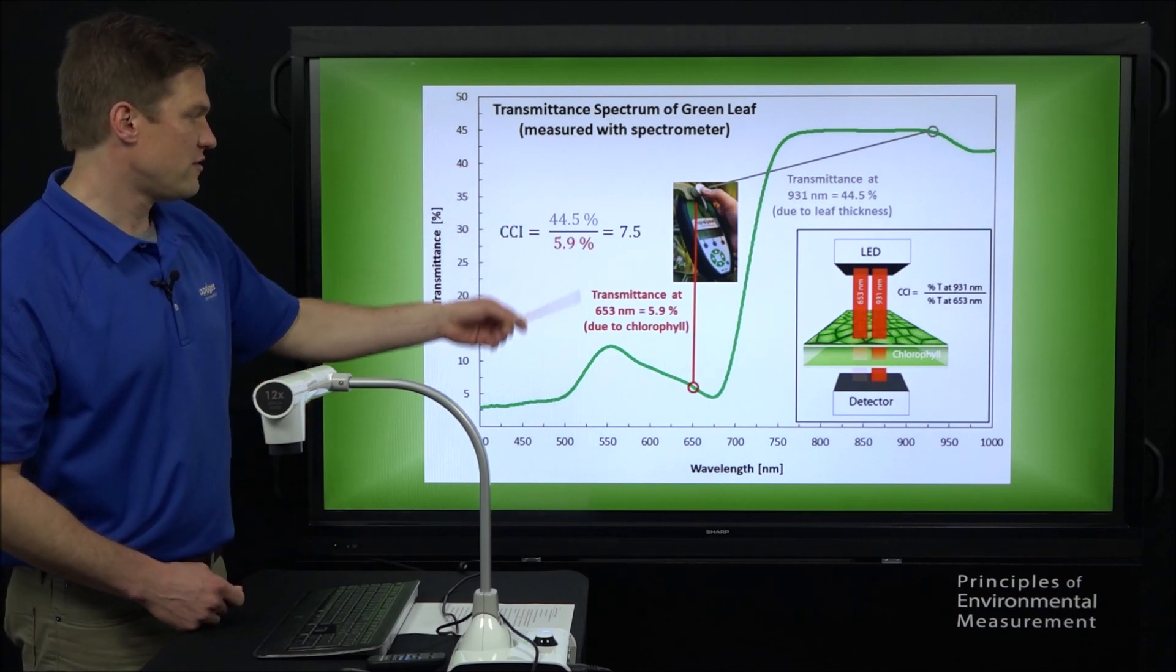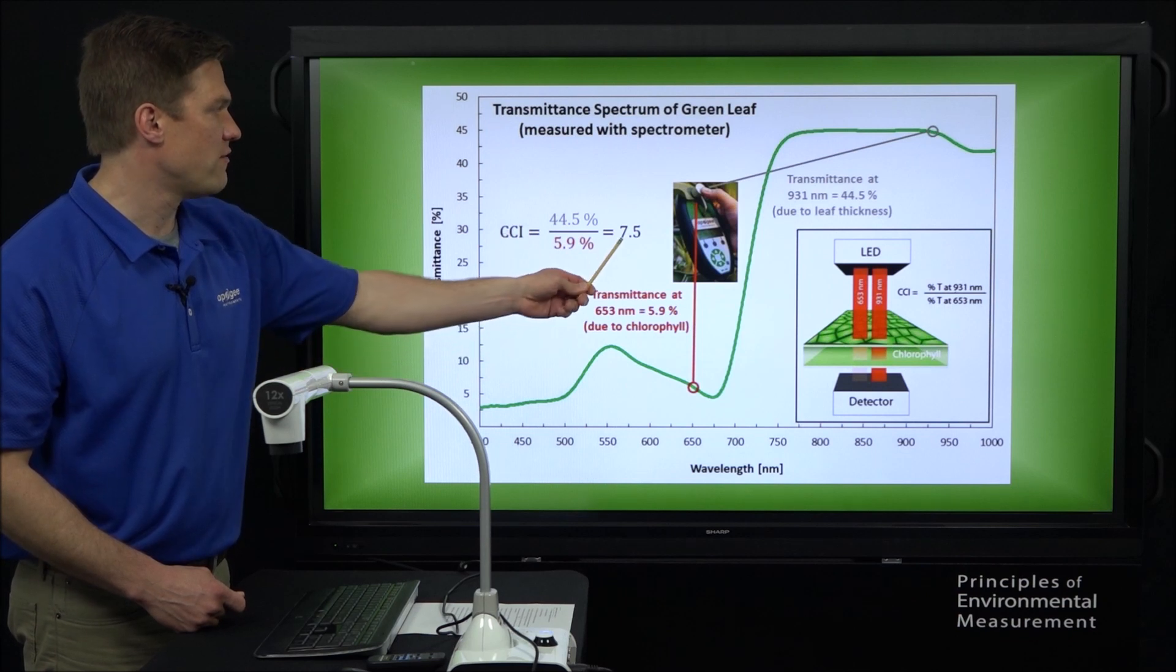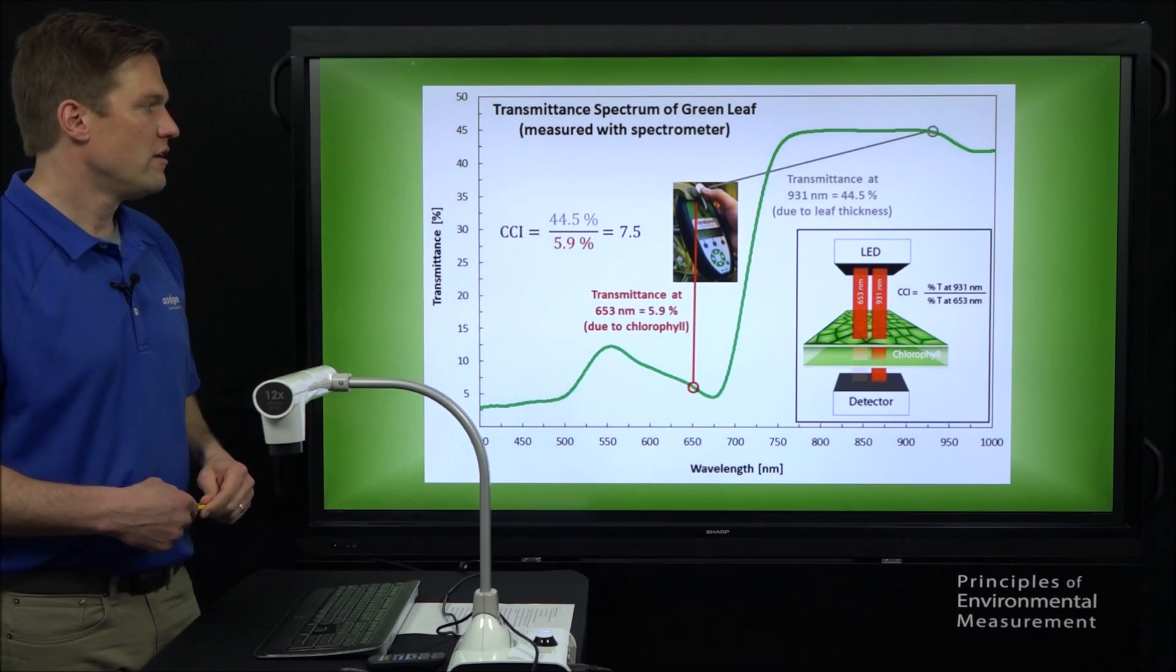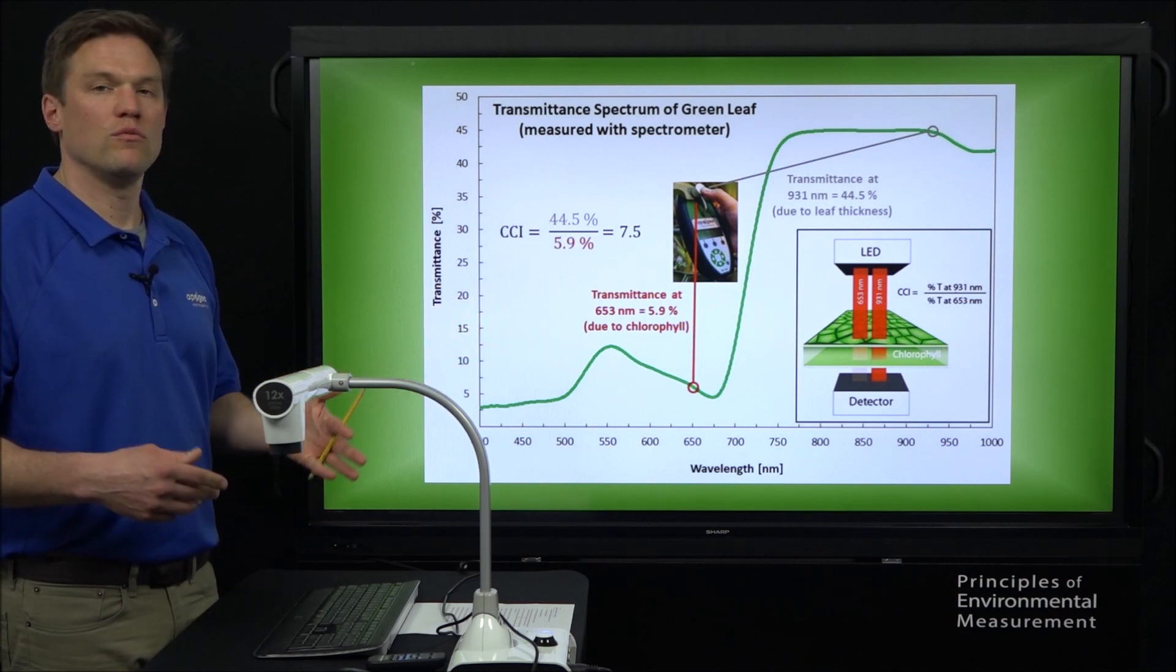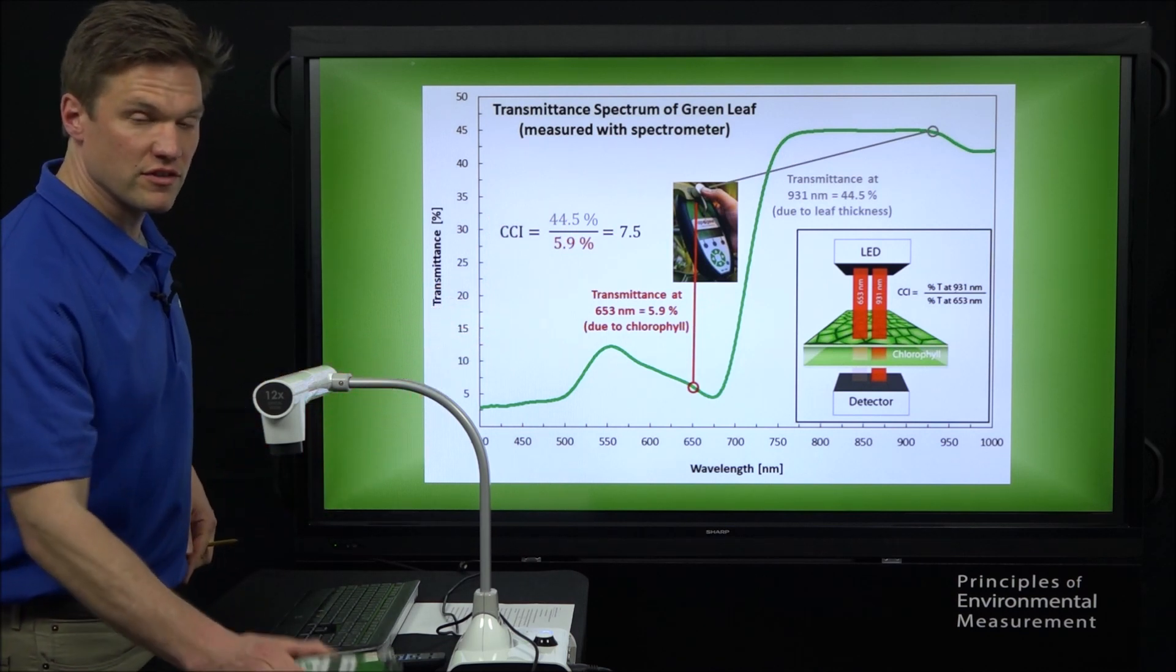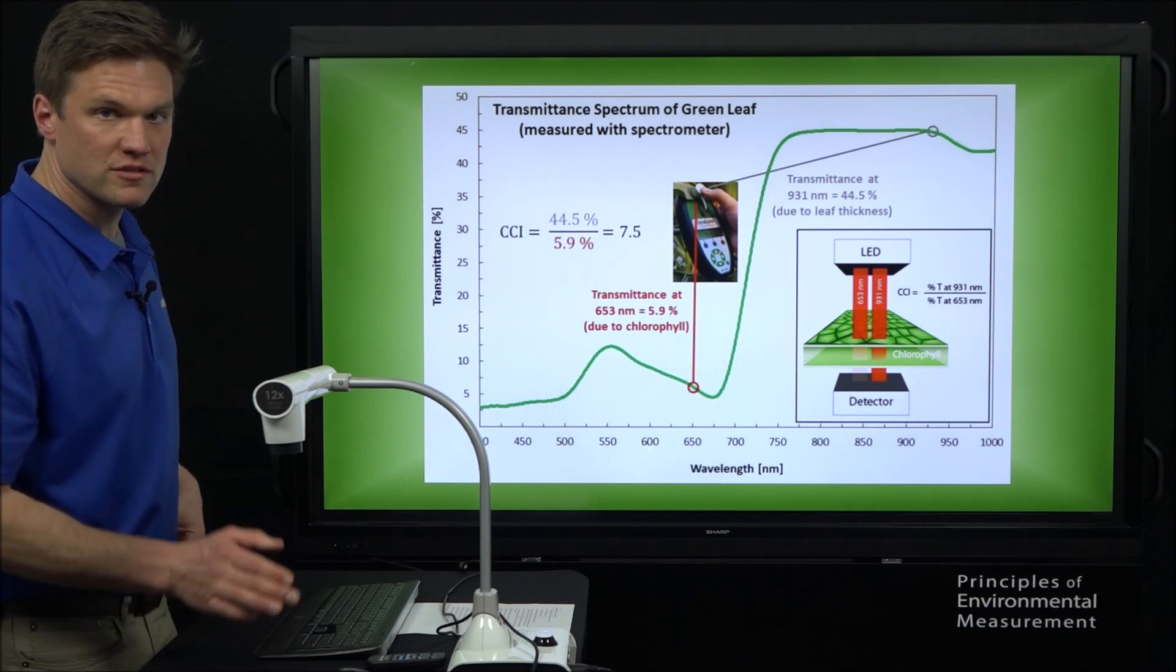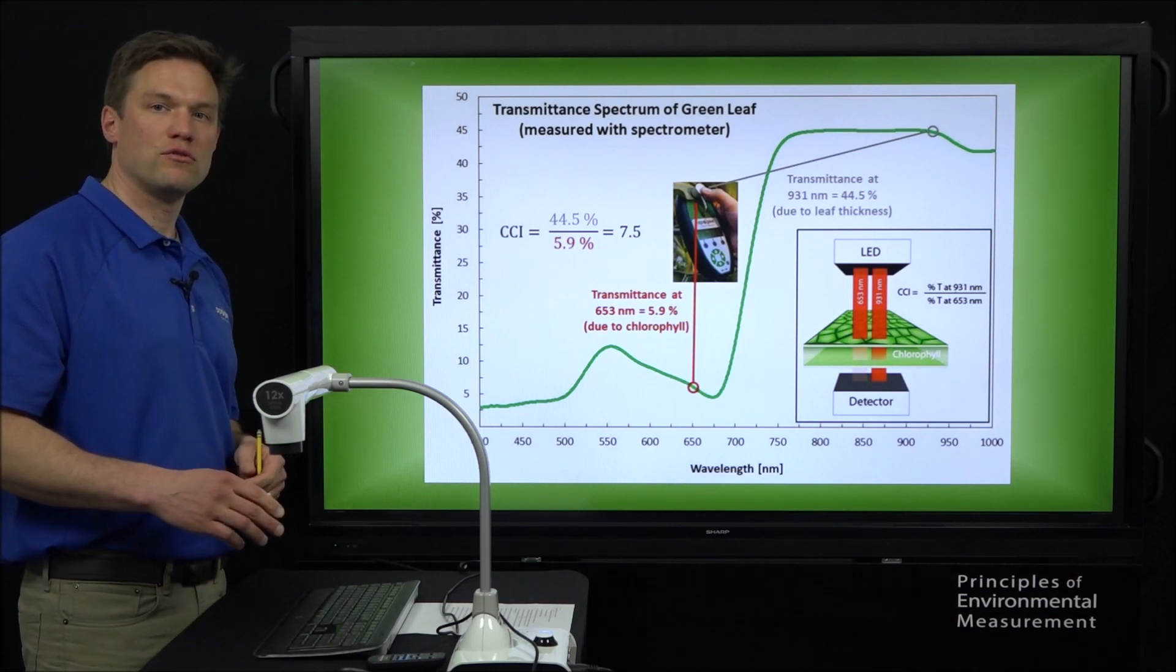And so in this example shown, we have a CCI value of about 7.5. This is a nice relative indication, but it's unitless. One of the great advantages of this meter is that it will convert that unitless measure into a measure of absolute chlorophyll.